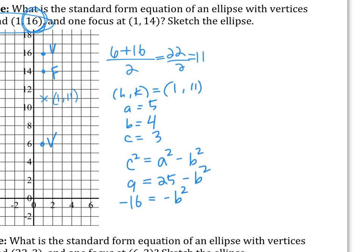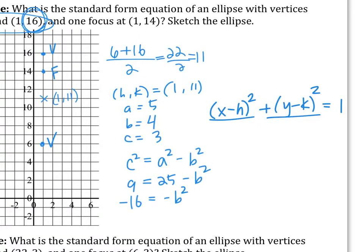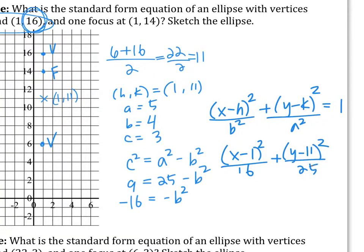Okay, this is an ellipse, so what is the ellipse equation? X minus H squared over [something] plus Y minus K squared [over something] equals 1. Now who has A squared? The Y, because that's where the vertex is — or the longer one. So A squared is under Y and B squared is under X. Plugging in all numbers: (x minus 1) squared over 16 plus (y minus 11) squared over 25 equals 1.